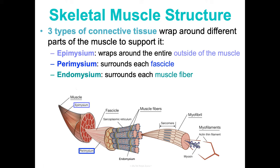In detail: a motor neuron fires an action potential down its axon. The axon terminal releases acetylcholine into the synaptic cleft. Acetylcholine binds to receptors on the muscle fiber's sarcolemma, causing a local depolarization, which yields an action potential across the adjacent sarcolemma. That signal causes the sarcoplasmic reticulum to release calcium, which binds troponin, moves tropomyosin out of the way, and the contraction happens.